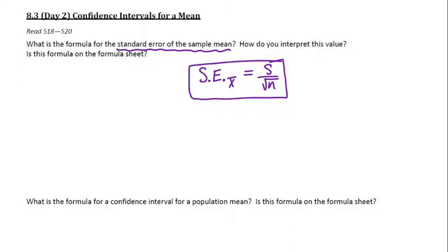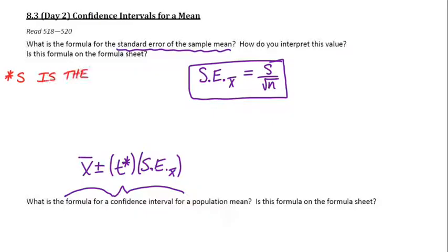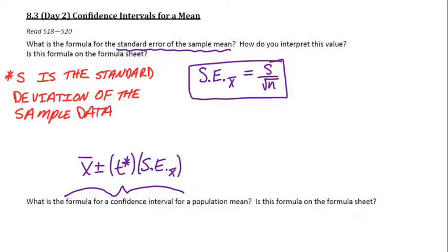So we use this standard error in our formula for confidence intervals when we're talking about means. We can just simplify this part to be little s over square root of N. Just to keep in mind, little s, that's the standard deviation of the sample data. It's not the population standard deviation. We have the sample data, we take the standard deviation of that data alone. That's what little s is.